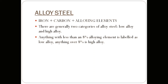There are two general categories of alloy steels: low alloy steels and high alloy steels. Anything which has less than eight percent alloying elements is called low alloy steel, and if the percentage of alloying elements is over eight percent, we call it high alloy steel.